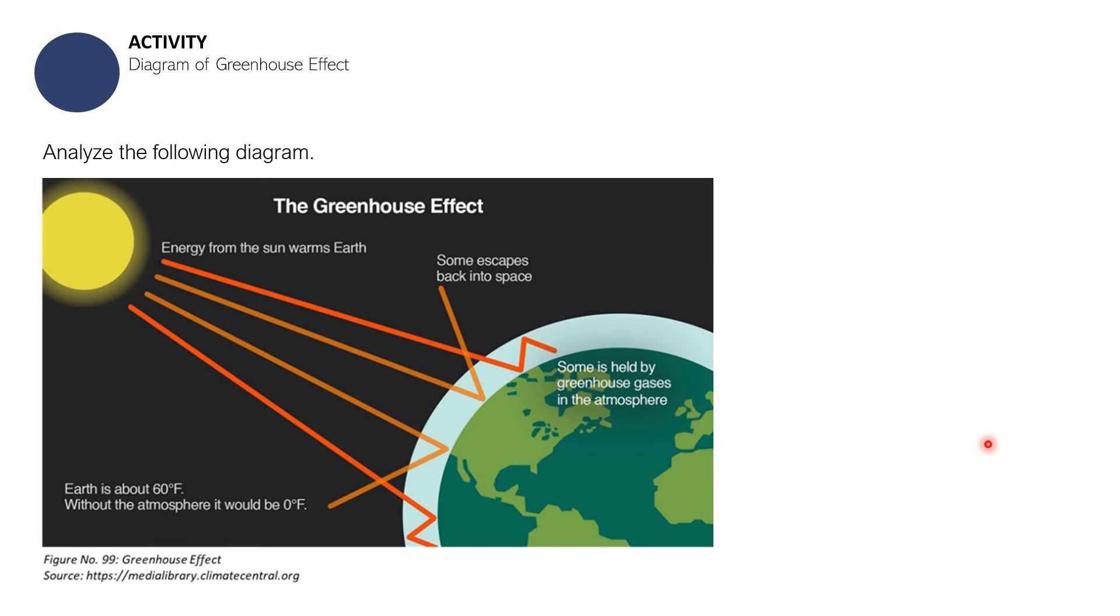The last part of this session is an activity on the diagram of greenhouse effect. What we'll be doing is much like an introduction to greenhouse effect, to global warming, and to climate change. We start with greenhouse effect. You see here there's this yellow orb right here. Energy from the sun warms the earth. Some escapes back into space, and some is held by greenhouse gases in the atmosphere. The earth is about 60 degrees Fahrenheit. Without the atmosphere, our temperature will be an absolute zero degree Fahrenheit. Keep your notebooks ready and your sheets of paper ready.